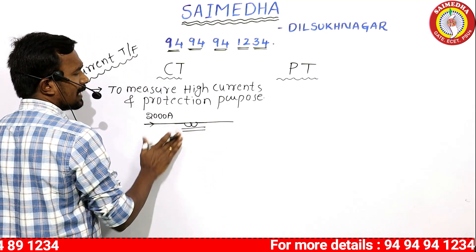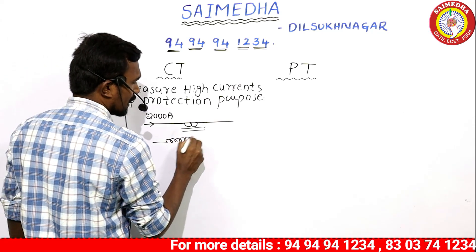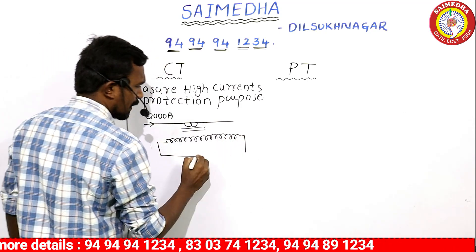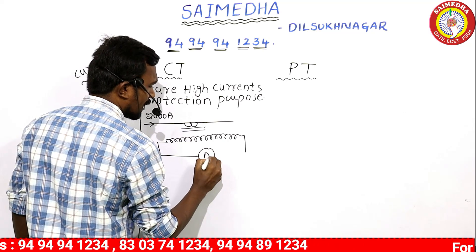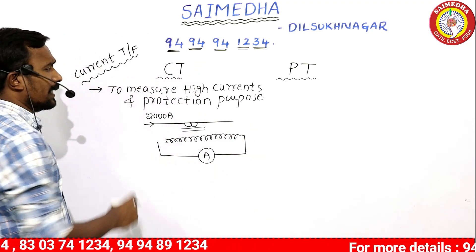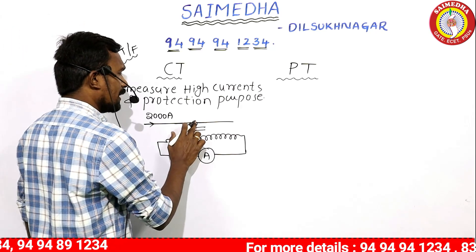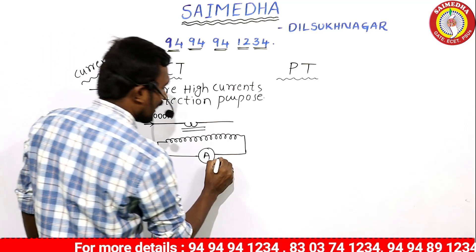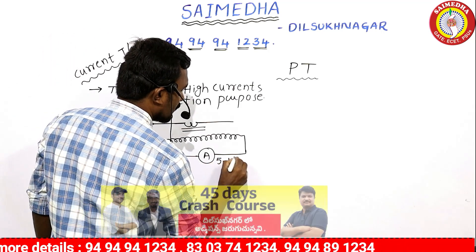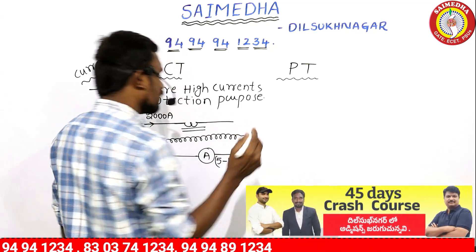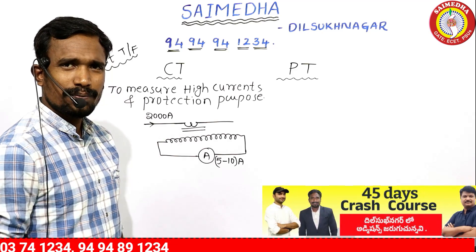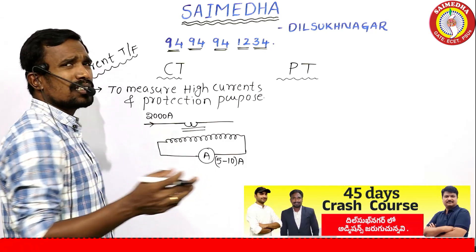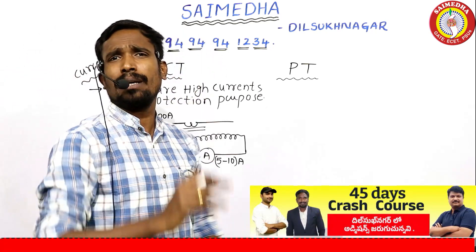This is my secondary winding. This secondary winding is connected to one ammeter. The ammeter range is limited.